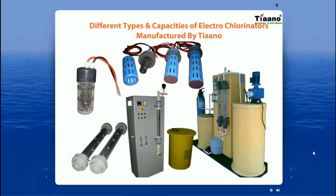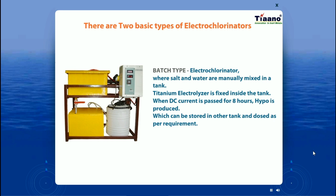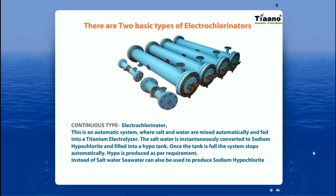There are two basic types of electrochlorinators. The first is the batch type: a measured quantity of salt and water are mixed in a tank with a titanium electrolyzer. DC current from a rectifier controller converts the salt water into sodium hypochlorite over eight hours, with an electronic timer shutting off after producing the required amount. The second, more advanced type is a continuous production system where salt and water are mixed automatically, fed into a titanium electrolyzer, and converted instantly to sodium hypochlorite. Seawater can also be used directly instead of salt water.